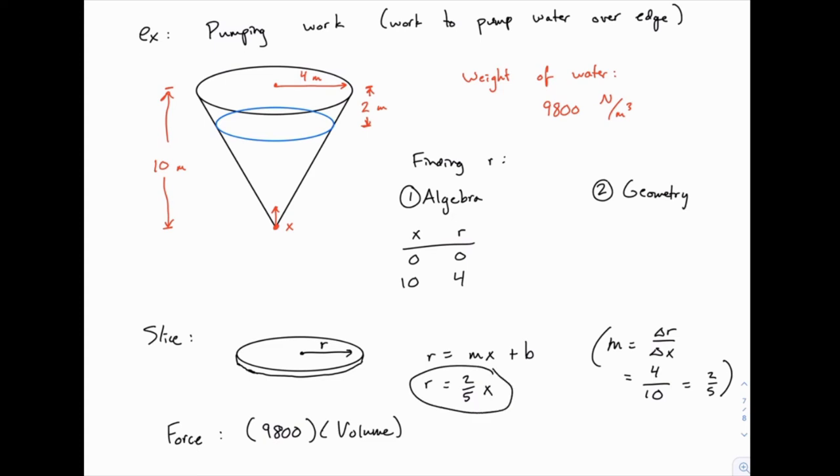If that went too fast for you, you can go back and try it again. But we're thinking of r just like y, and we're finding the line that connects two points: x equals 0, y equals 0, and x equals 10, y equals 4. But we're using r instead of y.